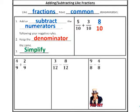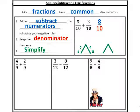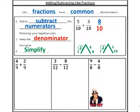Five tenths plus three tenths is eight tenths. Last step is always simplify. I'm going to do double mountain. One times eight is eight. Two times four is eight. One times ten is ten. Two times five is ten. Those are all my factors. I'm going to circle the biggest one in both lists and divide top and bottom by it. I get four fifths.